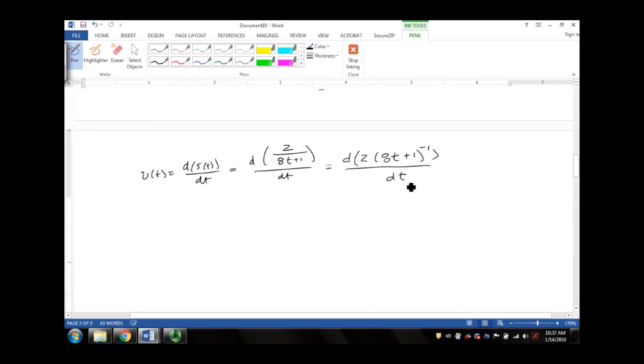So that will be 2 times negative 1 from the exponent times (8t + 1)⁻¹⁻¹ times the derivative of 8t which would be 8, which turns out to be negative 16(8t + 1)⁻² in units of meters per second. So that's one of our solutions.